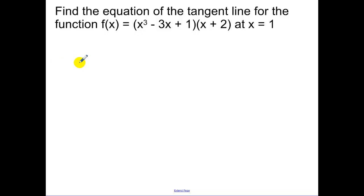Our next example, we need to write the equation of a tangent line for the function. So first we need a point, so we have to find f of 1. When I plug in 1, I get 1 minus 3 plus 1, and then 1 plus 2. That is going to simplify to negative 3.